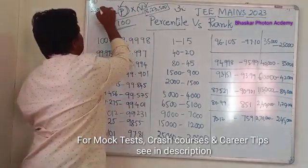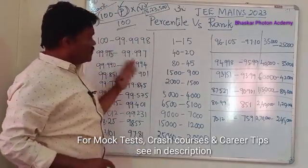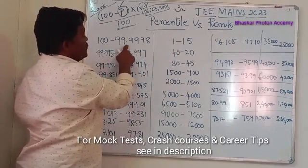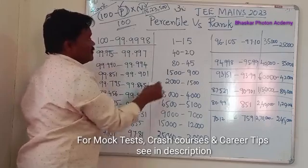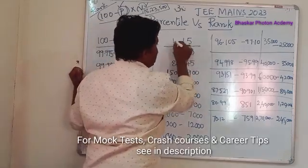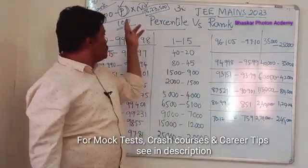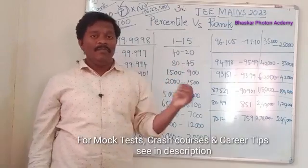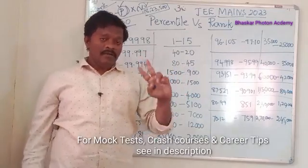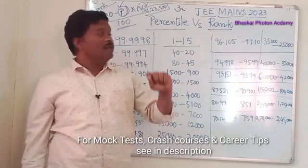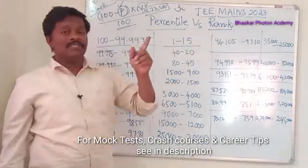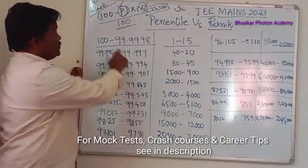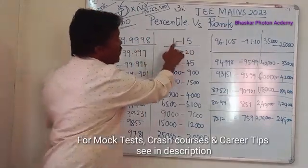Based on this formula, these are approximate figures. For session 1 and session 2, your best score among both sessions is considered. Candidates who scored in the percentile range of 100 to 99.9998 get an All India Rank of approximately 1 to 15. Using the formula, 100 minus 99.9998 gives a very small value, which when multiplied by 8,23,000 and divided by 100, yields ranks in the range of 1 to 15.